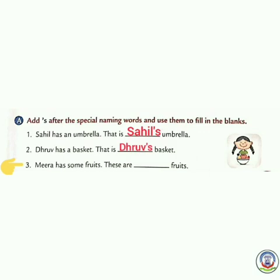Number three: Meera has some fruits. These are dash fruits. Whose fruits? Meera's. Kiske fruit hai? Of course, Meera. It means these fruits belong to Meera. That's why Meera's — you show belongingness by adding apostrophe S.